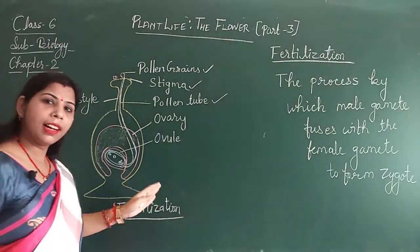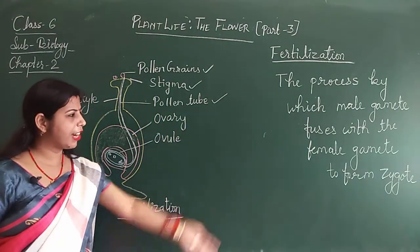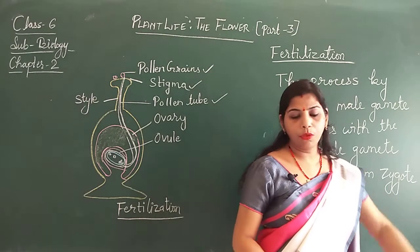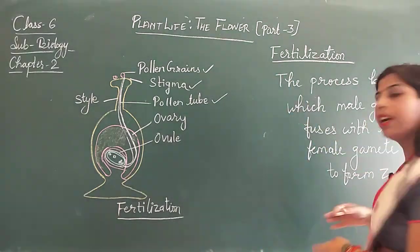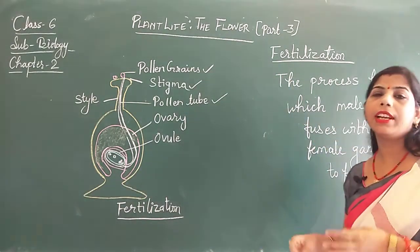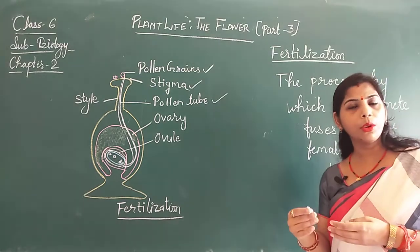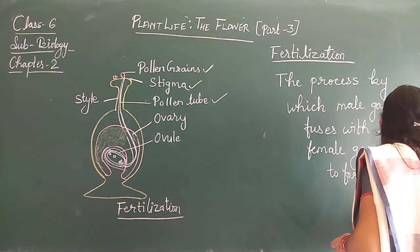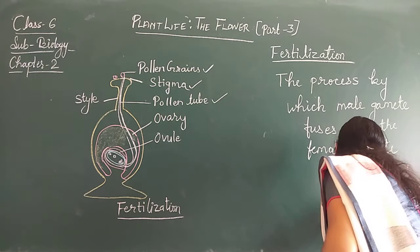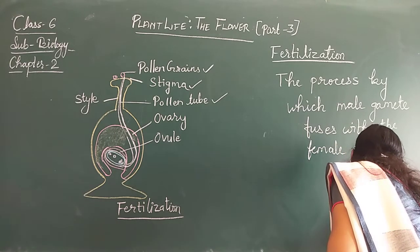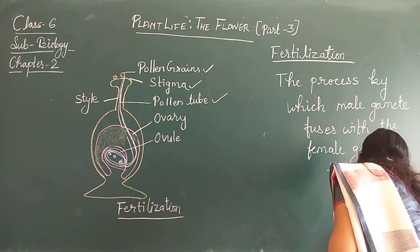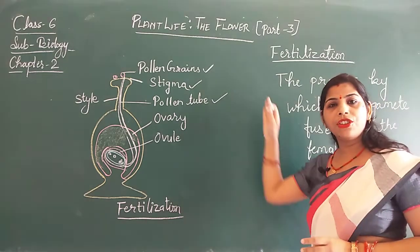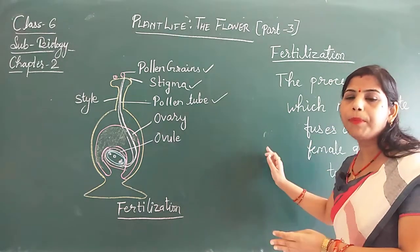This zygote is a single cell structure. After the formation of the zygote, the zygote undergoes rapid division, and this rapid division leads to the formation of the embryo. And the process of fertilization is completed.